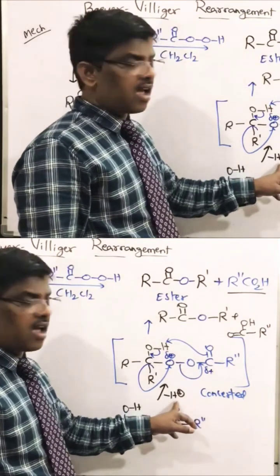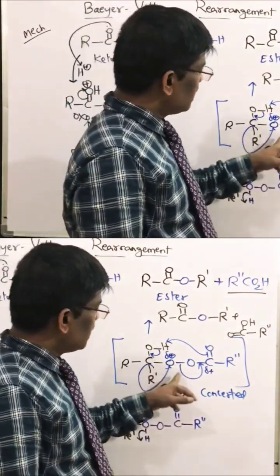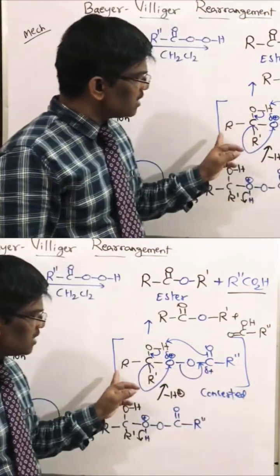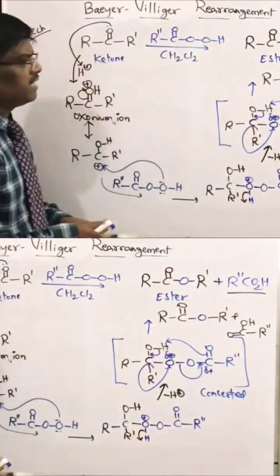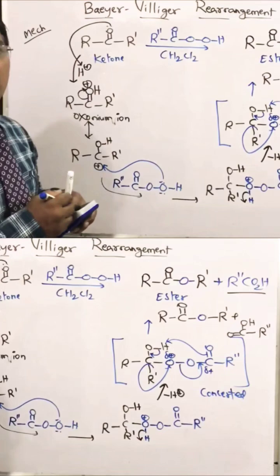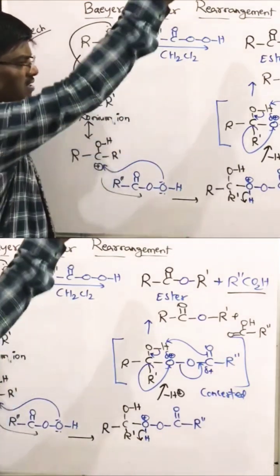This intermediate is going to lose H+ ions where this rearrangement is going to take place in a concerted manner. So what are the salient features of this reaction?